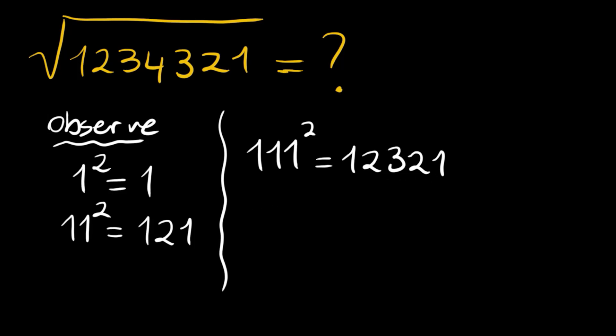1111² becomes 1,234,321. This system continues this way. If we have five ones, we will have 1-2-3-4-5-4-3-2-1, and so on. The result is right here. As we observed, we have 4 as the maximum digit.